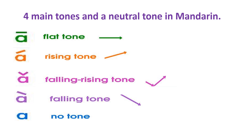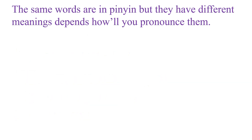So those are the main tones and the neutral tone in Mandarin. We've read all four tones plus the neutral tone. Now I want to give you examples using those four tones and the neutral tone. Let's pick the word MA. All of those MA's have a different meaning, but they have the same letters — MA. Because of the different tone, they have different meanings.